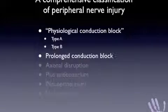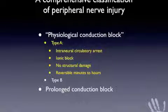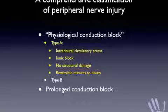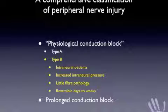Nowadays we use the term conduction block. Conduction block implies that there is no major structural damage to the nerve, but for some reason the nerve is not able to conduct electrical impulses. We talk about conduction block type A, in which there is intraneural circulatory arrest — an ischaemic event causing ionic block without structural damage — and this is reversible within minutes to hours. This is likened to the pins and needles or paraesthesia experienced by a patient with prolonged application of a tourniquet beyond 5 or 10 minutes. Physiological conduction block type B is related to intraneural oedema; there is increased intraneural pressure and very little fibre pathology. Recovery here is within days to weeks, because there are no intraneural lymphatics to clear this oedema, and this type of injury is seen with compression or traction on a peripheral nerve.